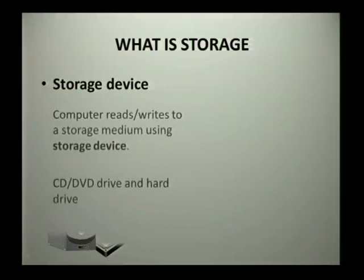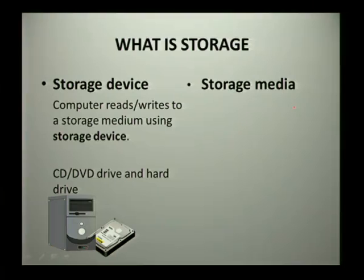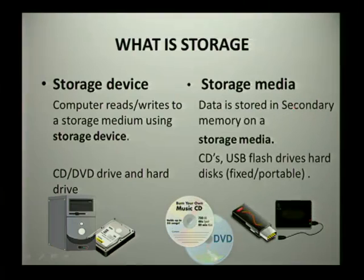Now let's look at storage. You've looked at input and output devices, so now we look at different storage devices. A storage device is what the computer uses to read and write to a storage medium. Your storage device would be a DVD drive or your hard drive. The storage medium is where data is actually stored in secondary memory — examples include CDs, USBs, and flash drives. These storage media are used with the storage devices that form part of your computer.